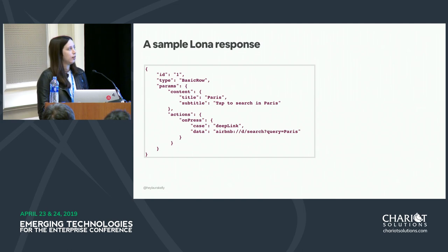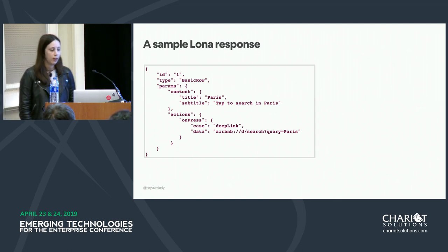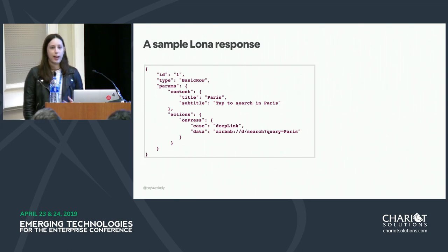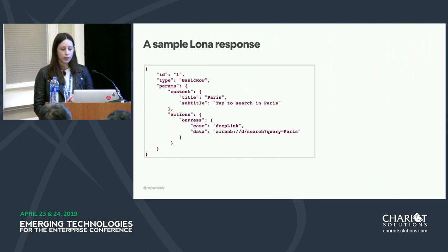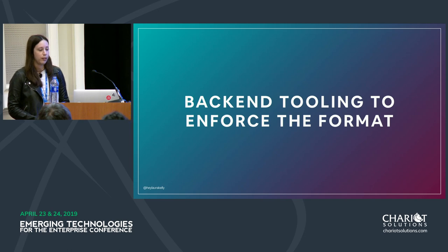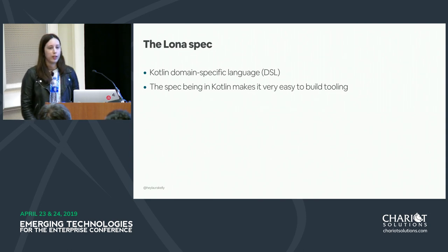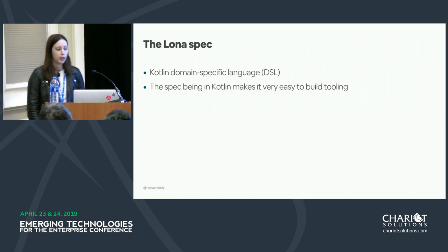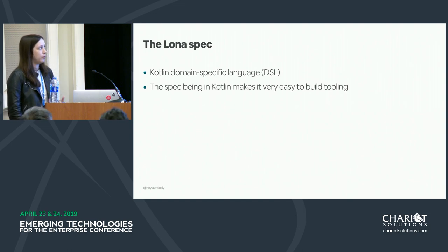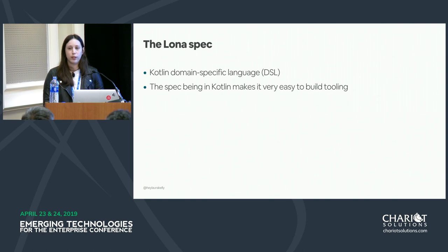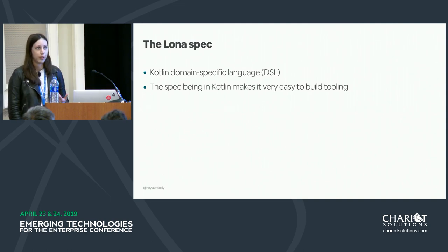Lona's unified format takes advantage of our design language system, where many components are already built out cross-platform. These components are specified with an API spec that looks similar to other systems we've seen — a component has a type, parameters for a title and subtitle, and an on-press action that redirects via deep link. The backend tooling is interesting: the Lona API spec isn't built with YAML or XML but with a Kotlin domain-specific language, making it easy to build tooling on top of it since Kotlin is a JVM language used elsewhere in the company.